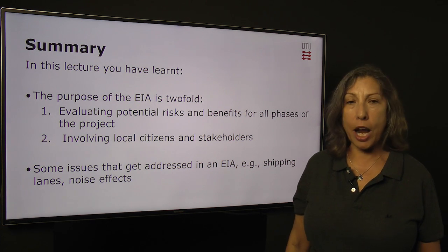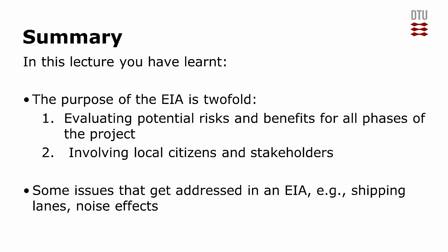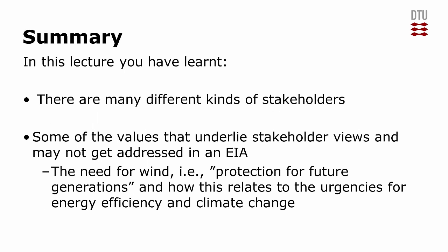In summary, what I hope you learned today is: what is the purpose of an EIA — evaluating potential risks and benefits for all phases of the project, from planning to decommissioning, and involving local citizens and stakeholders. We also discussed some issues addressed in an EIA, including shipping lanes and noise effects. There are many different kinds of stakeholders. Finally, some values that underlie stakeholder views may not get addressed in an EIA but are very important to discuss with citizens — for example, the need for wind, the protection of future generations, and how wind energy can address the urgencies of energy efficiency and climate change.